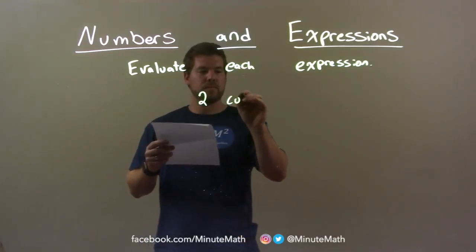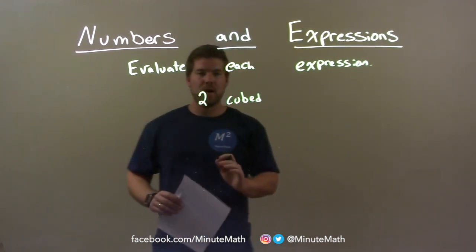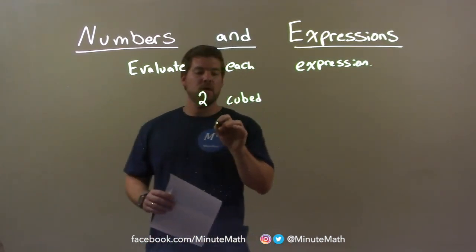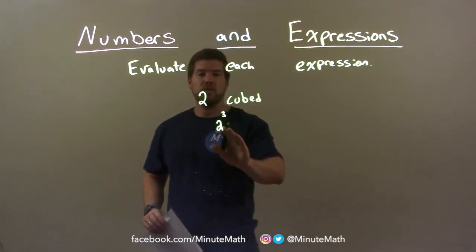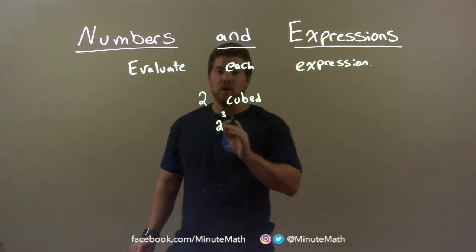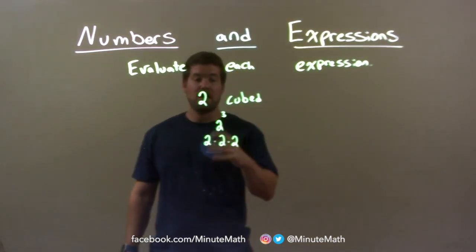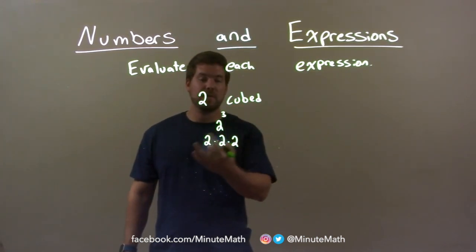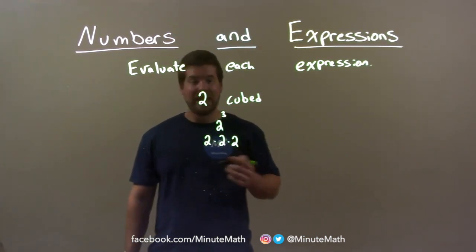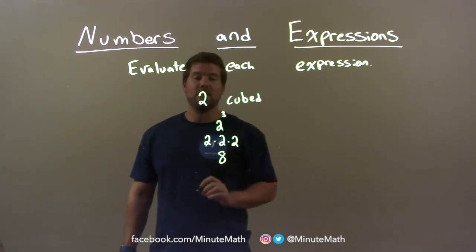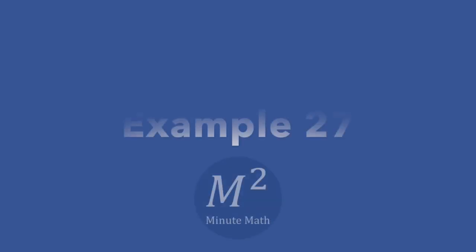2 cubed. So when I have 2 cubed, I can write this as an algebraic expression of 2 to the third power. If 2 cubed is 2 to the third power, well, 2 to the third power really means 2 times 2 times 2 — that's what it means to the third power. 2 times 2 is 4, times another 2 is 8. So we have a final answer of just 8.